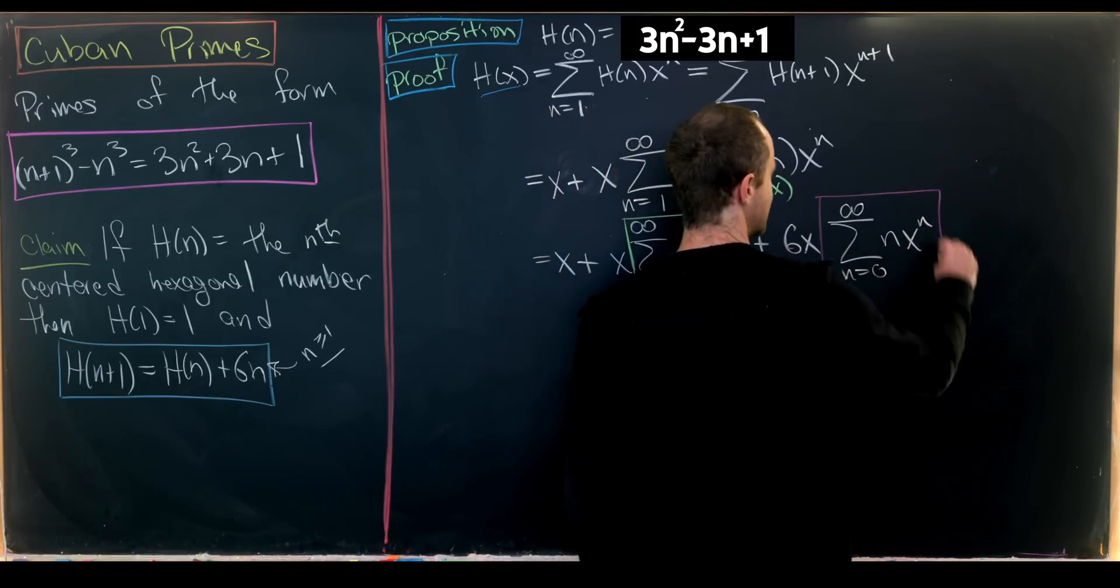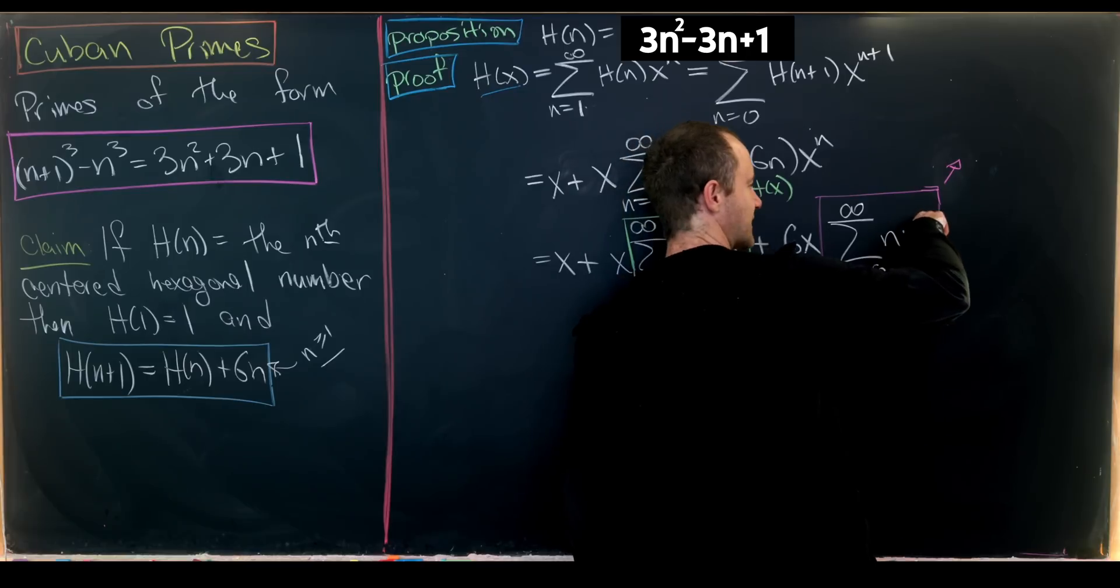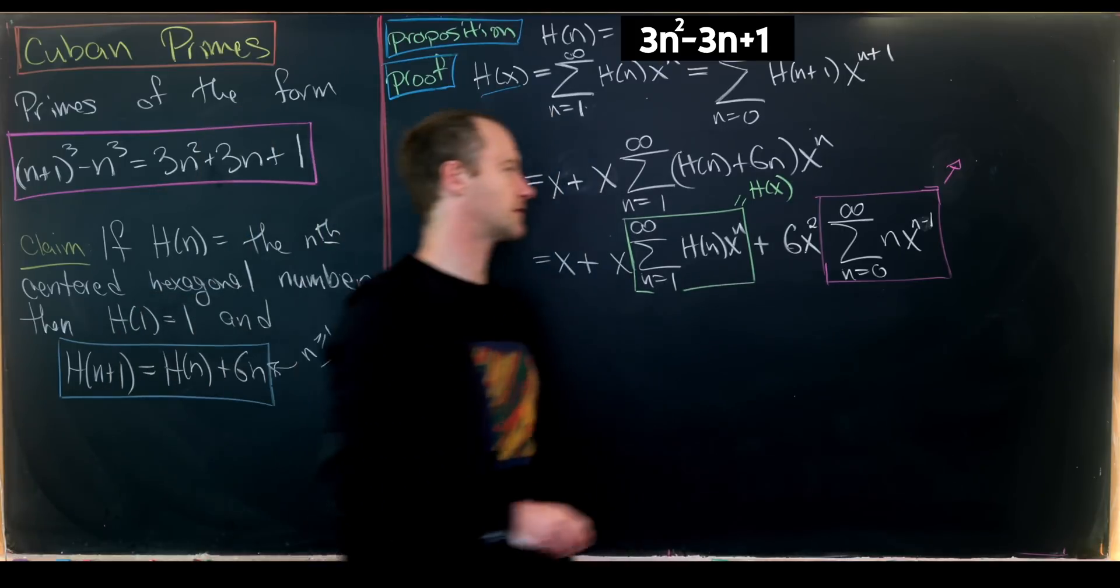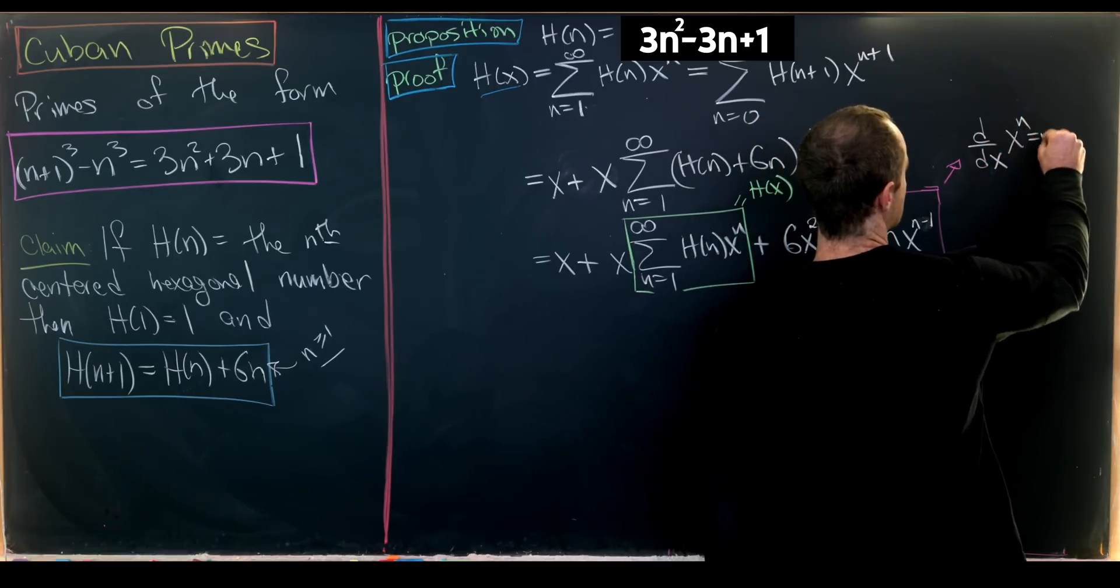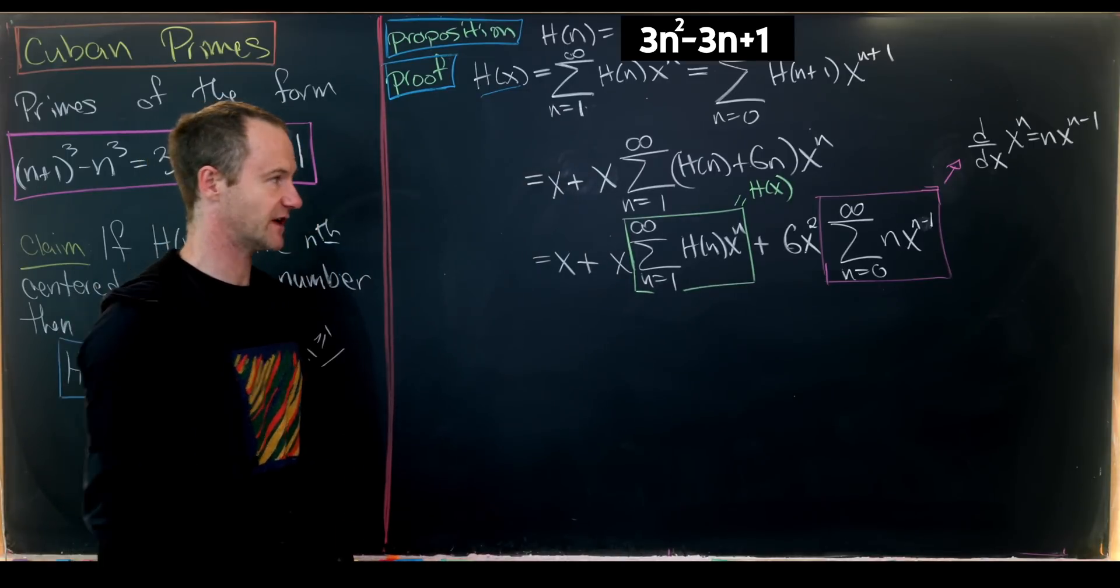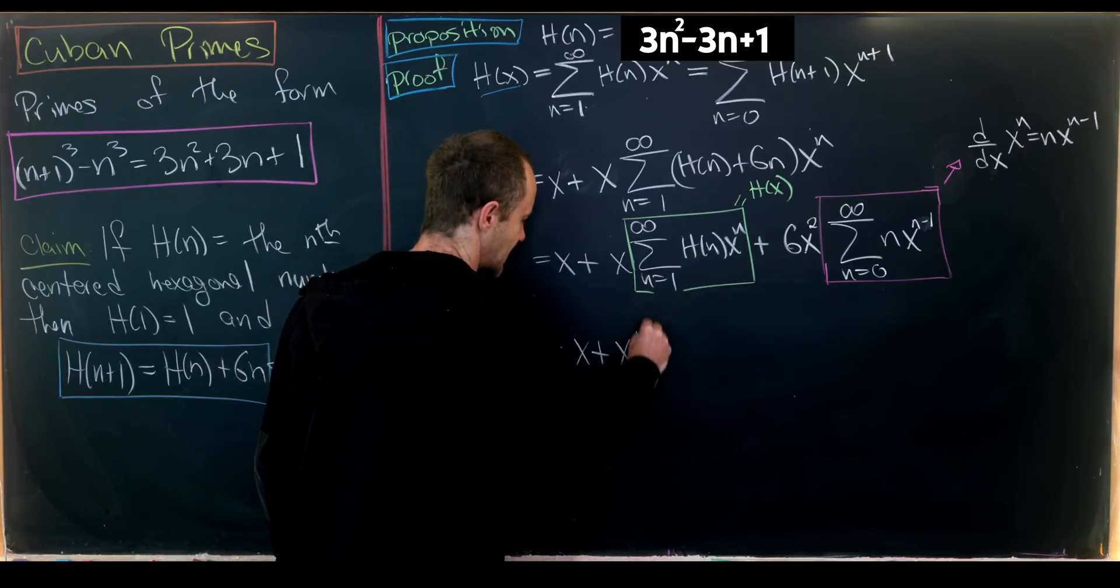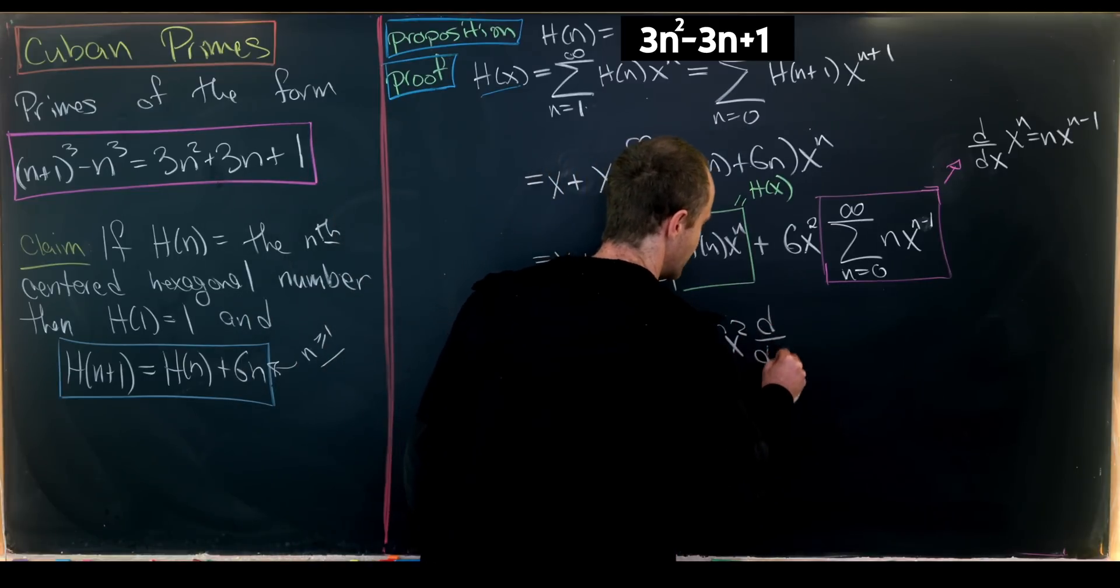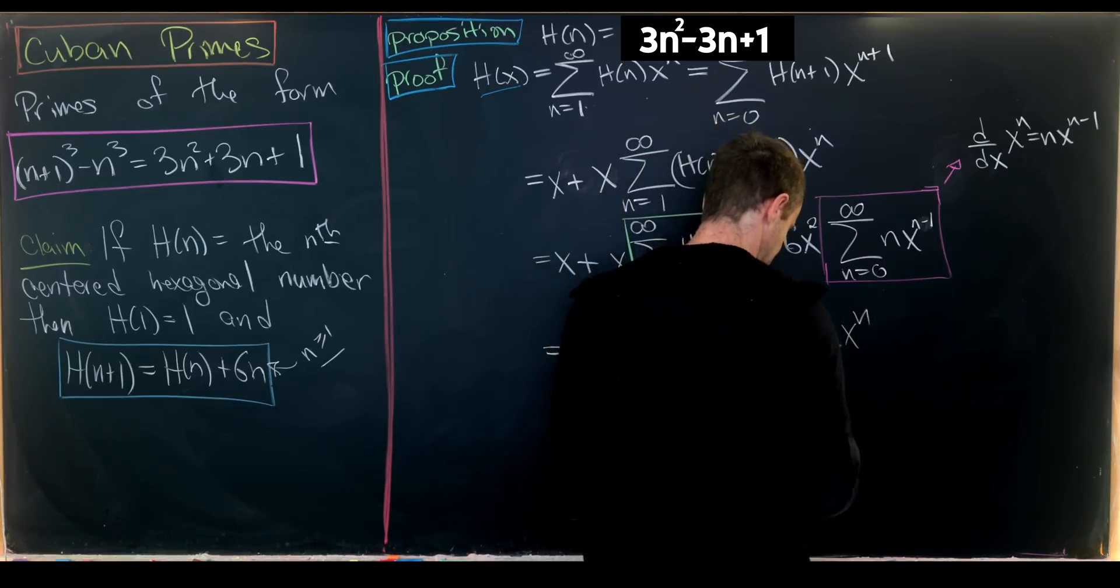We recognize the second sum as a derivative. Factoring out another power of x changes n to n-1. Using d/dx(x^n) = nx^(n-1), we're summing derivatives. Rewriting: H(x) = x + xH(x) + 6x²·d/dx[Σ(n=0 to ∞) x^n].